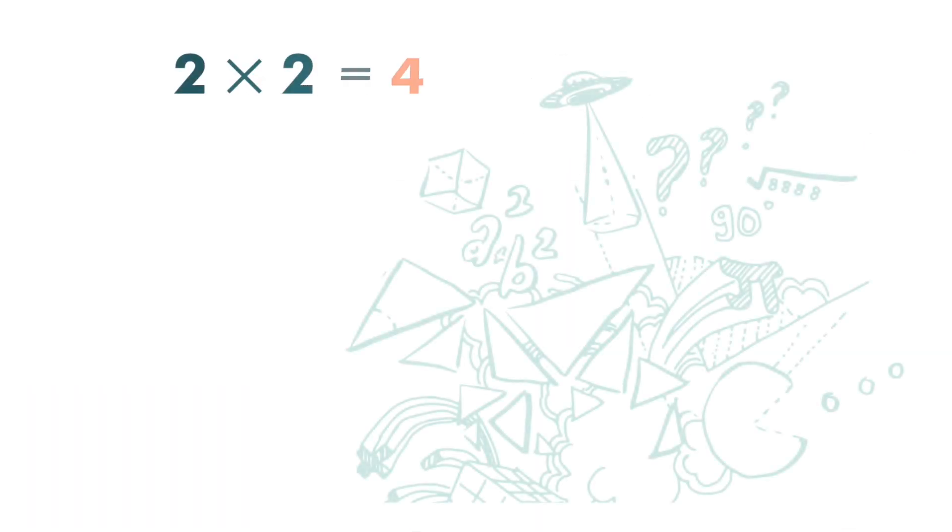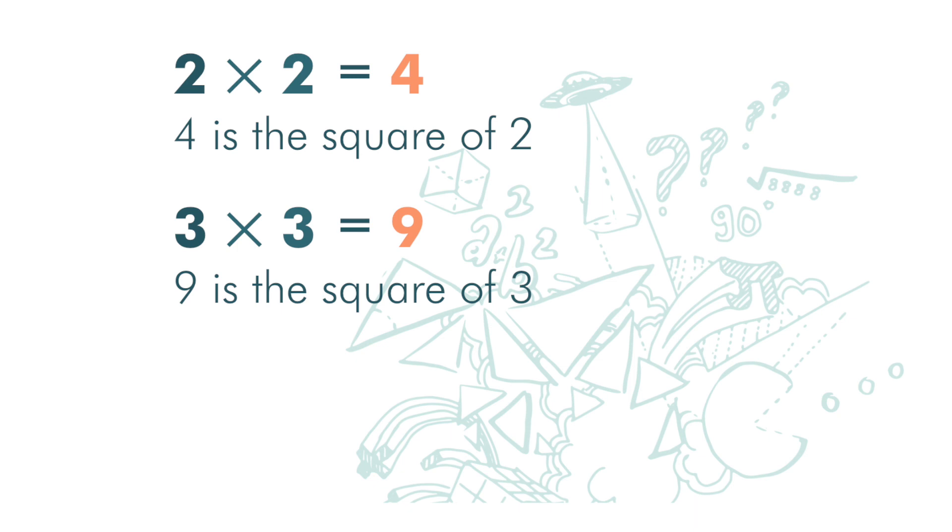If we have 2 times 2 equals 4, then 4 is the square of 2. If we have 3 times 3 is 9, 9 is the square of 3. 4 times 4 is 16, then 16 is the square of 4.